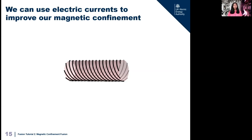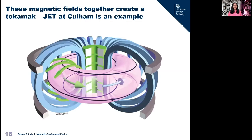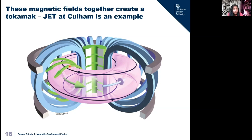If we draw all the field lines around the donut it would look like this. These magnetic fields combine together to make a plasma like what we have here at JET in Culham. This style of fusion using magnetic confinement is called a tokamak — a Russian acronym that basically means a torus-shaped, or donut-shaped, fusion reactor. The D-shaped coils create a magnetic field going around the long way, a transformer coil in the centre induces a current in the plasma, and that current generates magnetic field lines looping through the centre of the donut, creating a more stable plasma overall.